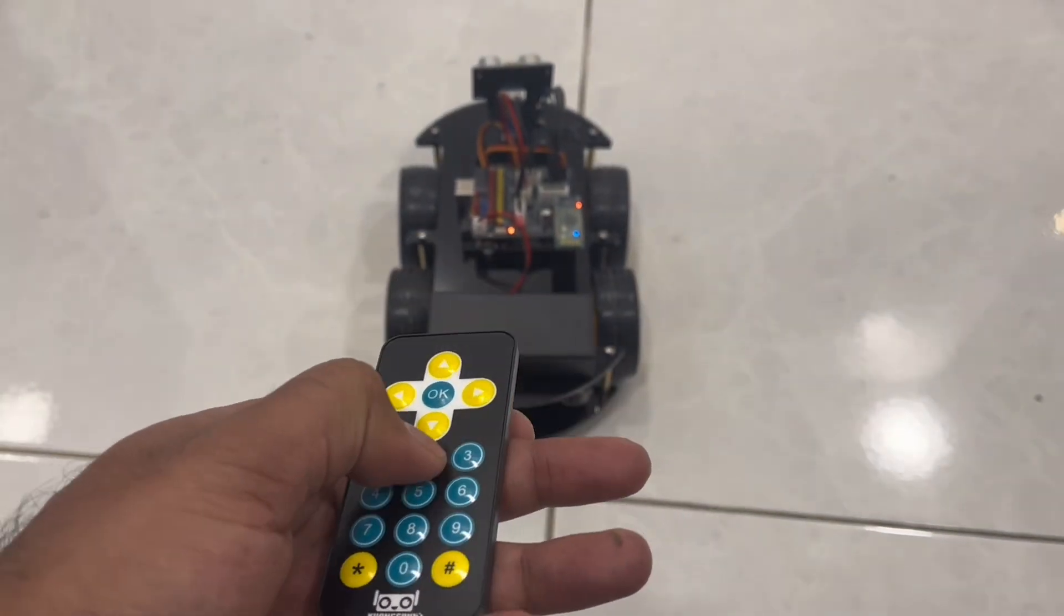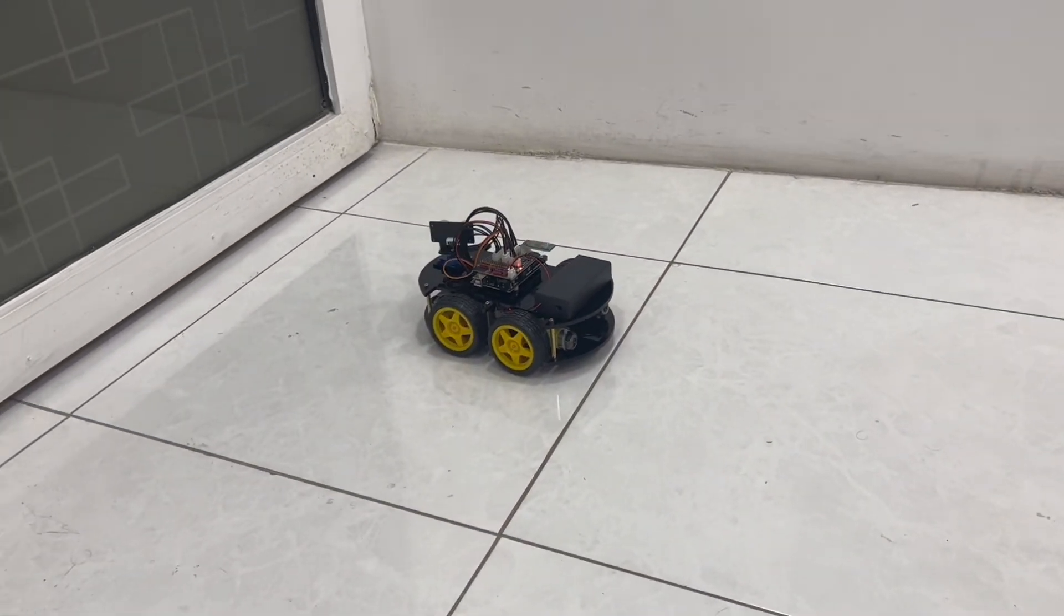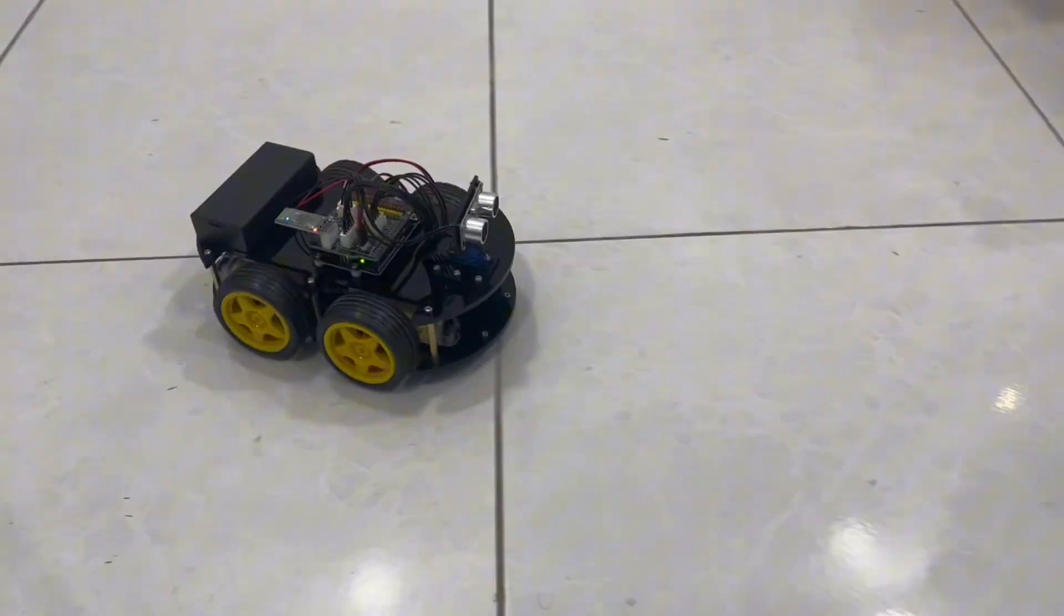If we press 2 on the remote, this robot car will turn to be an obstacle avoiding car.